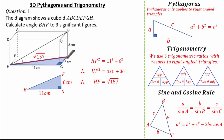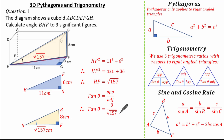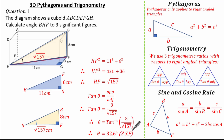Now I know HF is root 157, I can look at triangle BHF and work out angle BHF. Highlighting this right-angled triangle, because my angle is here, this is my opposite and this is my adjacent, so I'll be using tan. Substituting what I know: tan theta equals 8 over root 157. To find theta I do the inverse of tan, inputting tan to the minus 1 of 8 over root 157, giving angle BHF as 32.6 degrees to three significant figures.